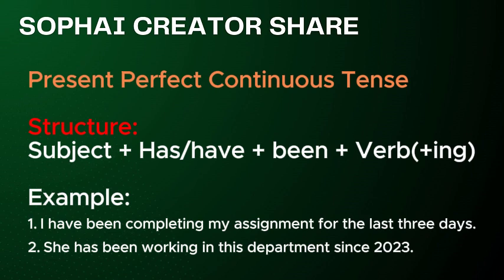Present perfect continuous tense. Structure: Subject plus has or have, plus been, plus verb plus -ing. Examples: 1. I have been completing my assignment for the last three days. 2. She has been working in this department since 2023.